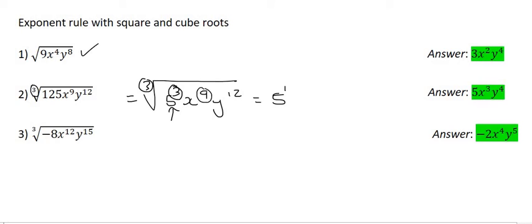Then with the x's, we're going to say 9 divided by 3, so that's just going to be x to the 3. And then it's going to become y to the power of 4, because we're saying 12 divided by 3.